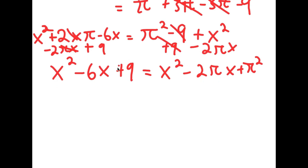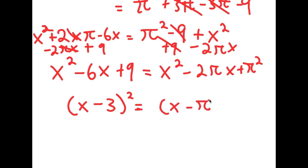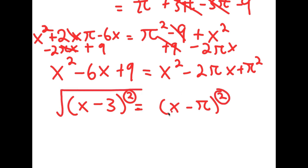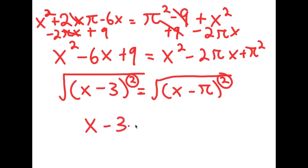So I have x squared minus 6x plus 9 is equal to x squared minus 2pi x plus pi squared. Now, x squared minus 6x plus 9 factors out into x minus 3 squared. And x squared minus 2pi x plus pi squared is the same thing as x minus pi squared. So I have x minus 3 squared is equal to x minus pi squared. I want to cancel these two squares, so I'm going to take the square root on both sides. The square root of x minus 3 squared equals x minus 3, and the square root of x minus pi squared equals x minus pi.